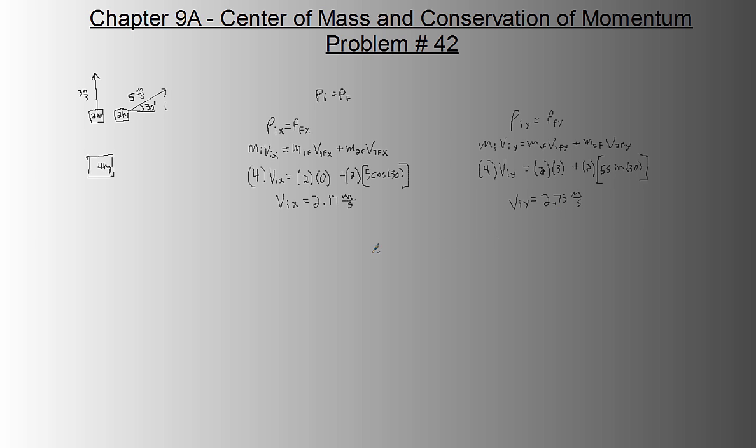Now what's the actual original velocity? Velocity initial is the square root of velocity initial x squared plus velocity initial y squared. So that's the square root of 2.17 squared plus 2.75 squared. Which equals 3.5 meters per second.